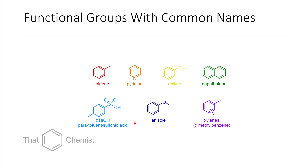Before we get into the material for today, I wanted to introduce a few other common functional groups. Here we have toluene, which is just methylbenzene — it's used as a solvent, and there are several derivatives you'll see throughout organic synthesis. Here we have pyridine, a six-membered ring. Pyridine and its derivatives are frequently used as bases, ligands, or catalysts in organic chemistry. Here we have aniline — similar to how phenol gets a special name, nitrogen connected to a benzene ring gets the special name aniline.